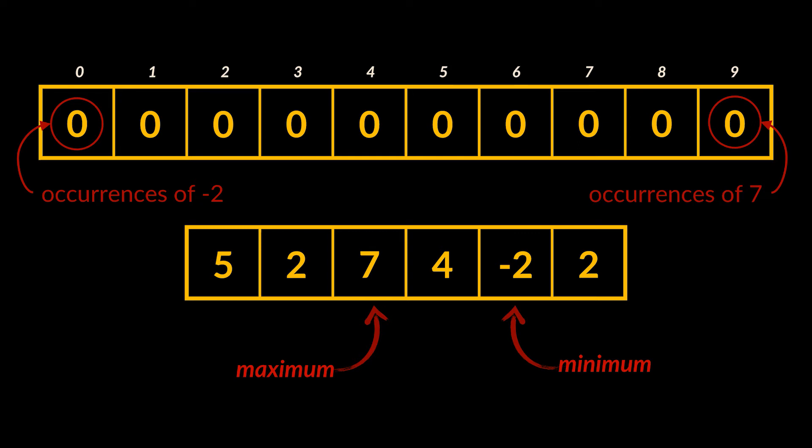Index nine, the highest index, will store the number of occurrences of integer seven. But why 10 slots and not nine? We have a slot for minus two, another for minus one — that's two slots — then seven slots from one to seven, so that's nine slots. And do not forget that between those we also have zero, which sums up to 10.